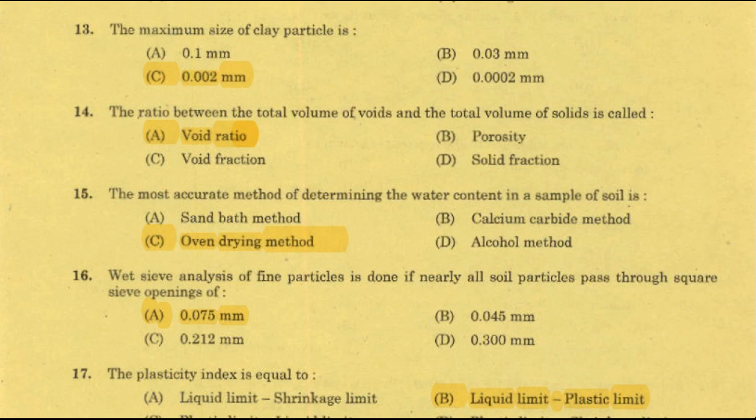On clay properties: Montmorillonite is a highly expansive mineral that possesses high shrinkage and swelling properties. An example of Montmorillonite mineral is bentonite clay. Bentonite clay has a liquid limit higher than 400 to 600 percent. Montmorillonite is a reactive clay mineral.